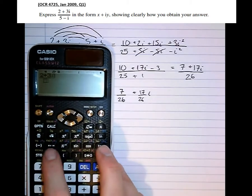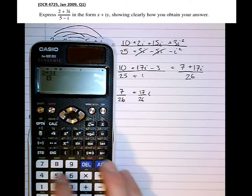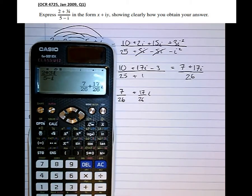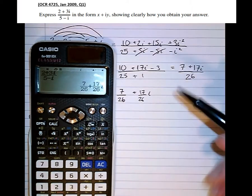above ng over 5 minus i, then press equals, it should present it in the desired form, 7 26ths plus 17 26ths i, which is exactly what we wanted.